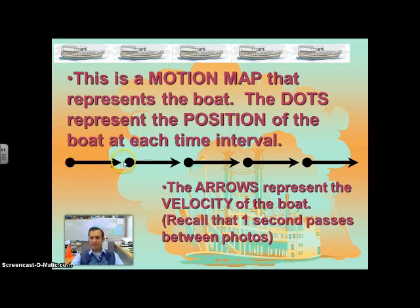We then kind of not completely connect the dots, but draw an arrow from the first dot to the next dot. And that arrow represents the velocity of the boat. So the greater the length of the arrow, the faster that object is moving.